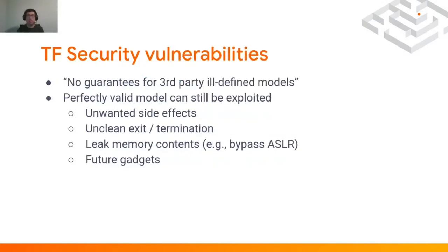In the security policy, we also describe what we consider a security vulnerability. In general, we provide no guarantee for third-party ill-defined models, but even perfectly valid models can be exploited, and we have handled around 500 vulnerabilities in the past four years. Some have been unwanted side effects like changing function output or creating files on disk. We also had cases where the process would exit uncleanly via assertion failure or segmentation fault, or where memory contents were leaked — potentially usable to bypass security policies like ASLR — and these could be used to create even more powerful attacks.